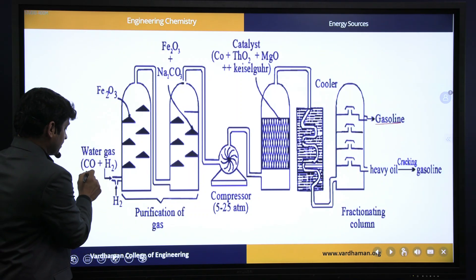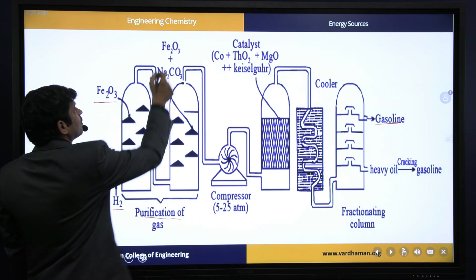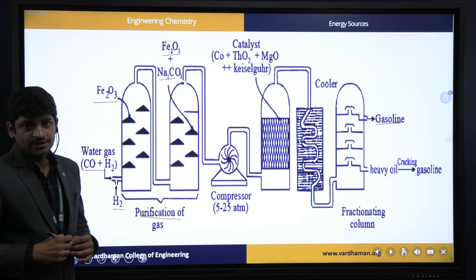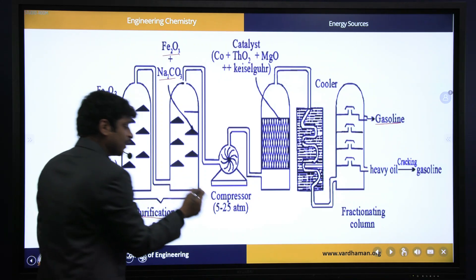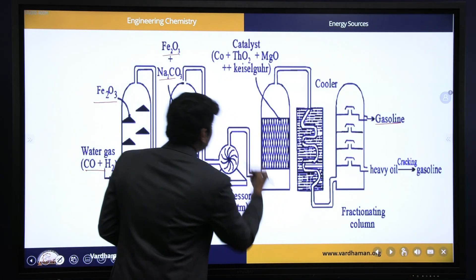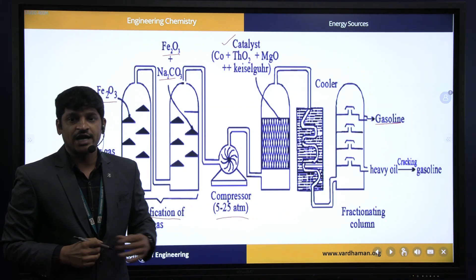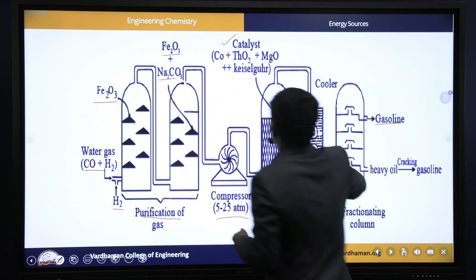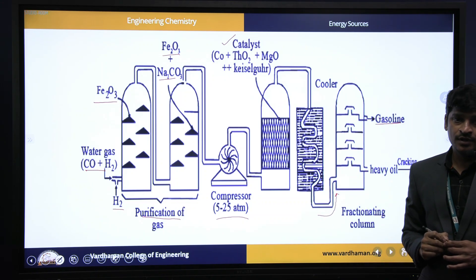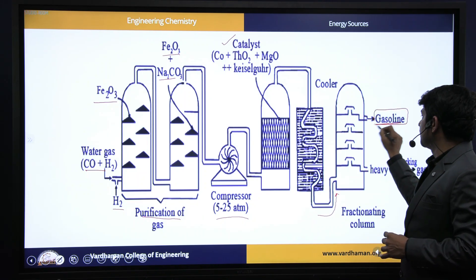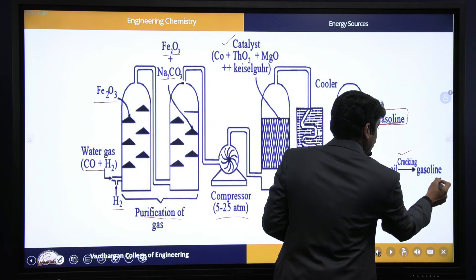In the process, water gas and hydrogen gas are first passed into purification chambers containing ferric oxide and sodium carbonate (in two separate chambers) to remove organic and inorganic impurities. The purified gases are then compressed to 5 to 25 atmospheric pressure and passed into the reaction chamber containing the catalyst. The reaction takes place there, producing gasoline or petrol. The vapors from the reaction chamber are passed through a water condenser and then through a fractional distillation tower, from which gasoline is separated according to boiling point. Any heavy oil obtained can be used in a cracking process to produce more gasoline.